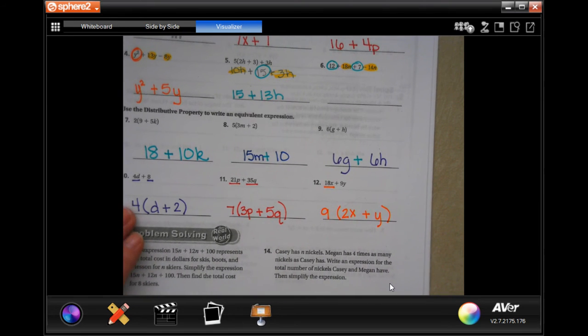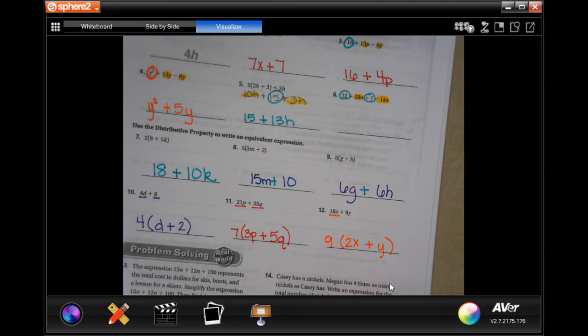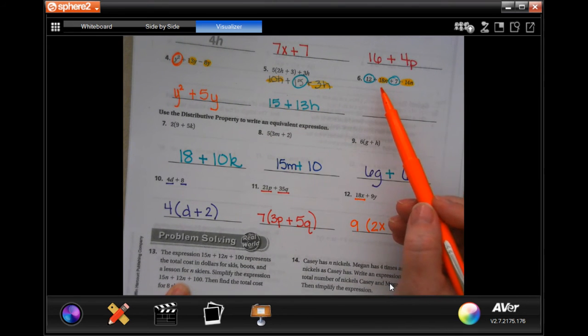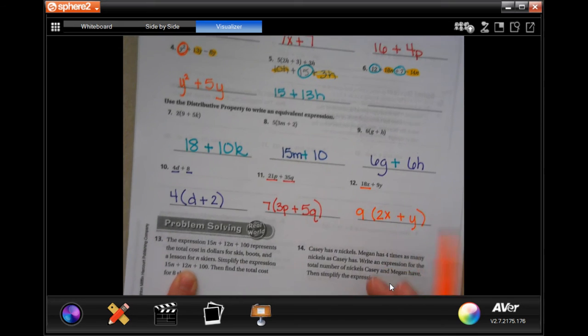All right, guys, this one we're going to pull out 9. So 9 on 2, 9 times 2 is 18, and I'm keeping the x, and 9 times 1 is 9, so I'm just going to do y. So I'm going to come down here, and I'm going to do number 13. You guys do number 6, and you're going to do number 14 on the front side.